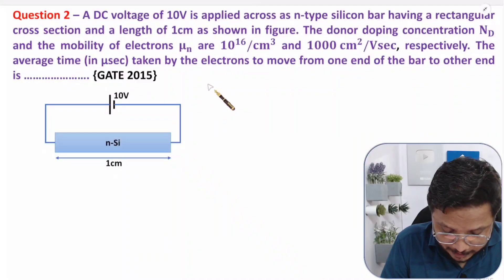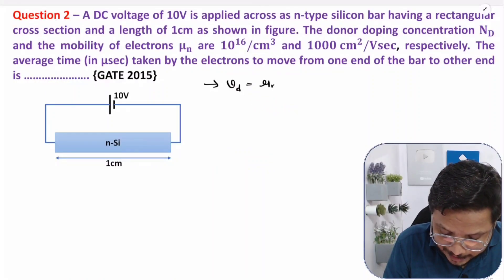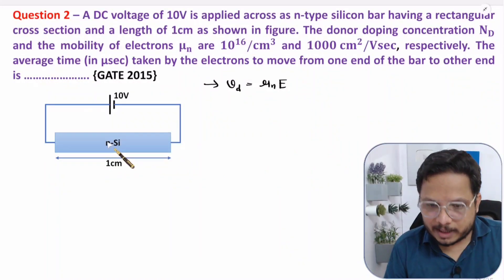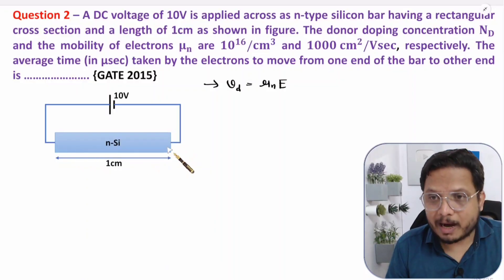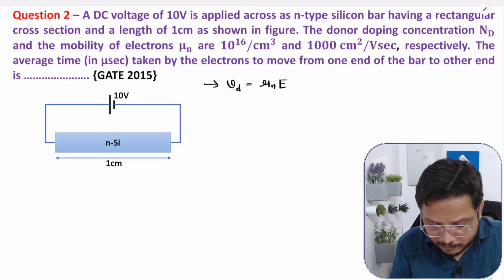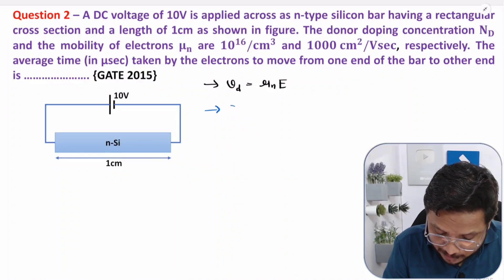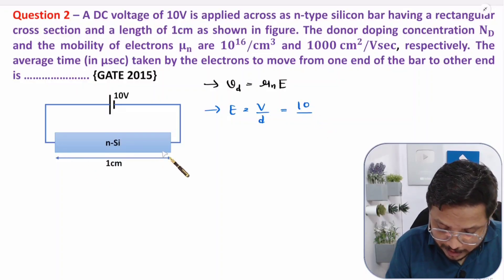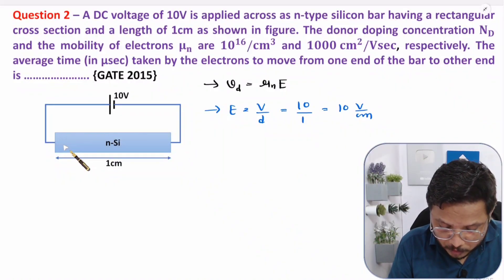Drift velocity is μN multiplied by electric field. The electric field can be calculated based on the length of the bar and the potential applied. Electric field will be uniform throughout the bar based on planar electric field. So electric field equals potential divided by distance: 10 volts divided by 1 centimeter, giving 10 volt per centimeter.